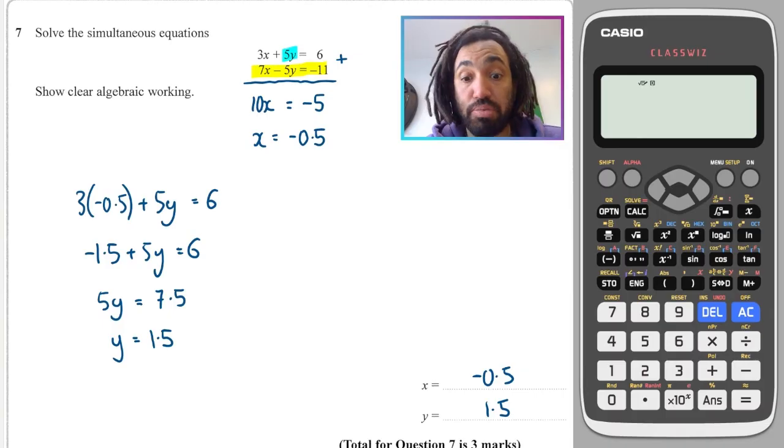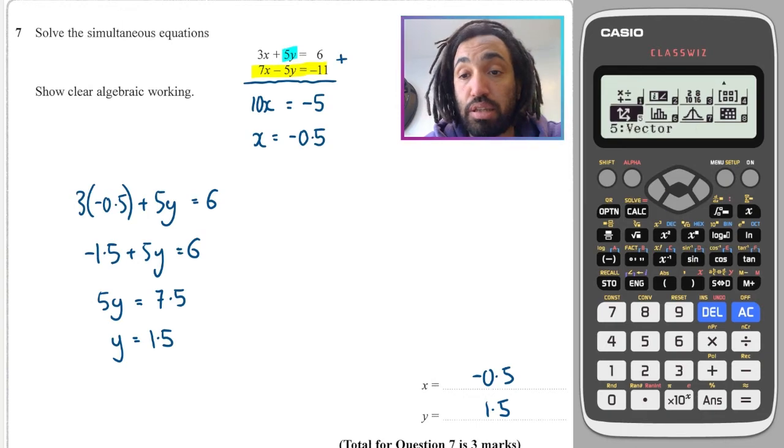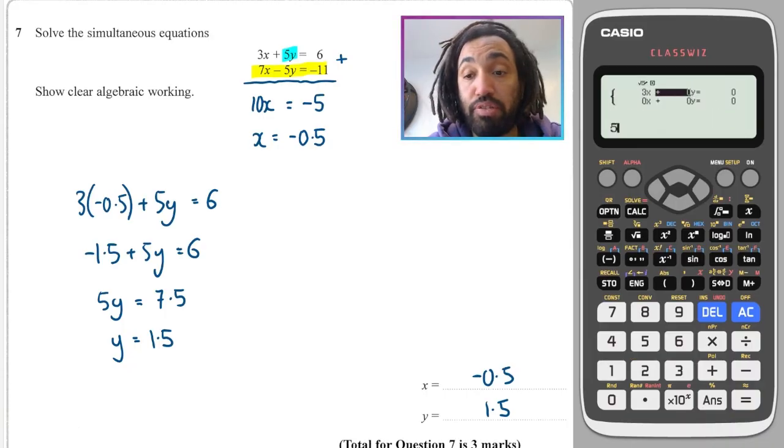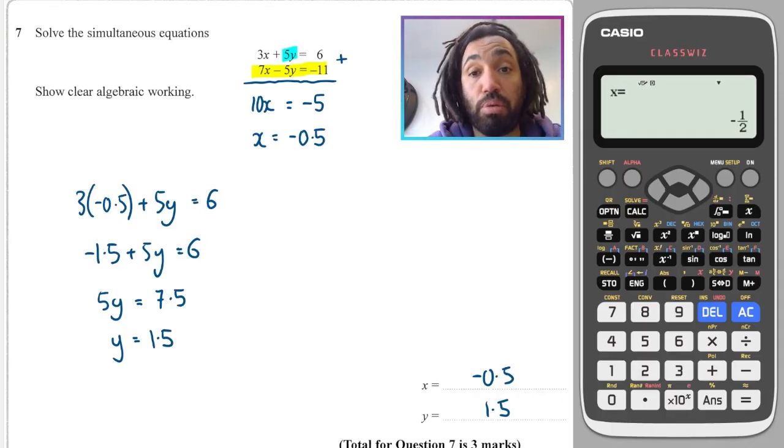Okay, and then top tip is to use your calculator to your benefit and check to see if it's right. So you go to simultaneous equations, two unknowns. You type in that it was 3, 5 and 6. And then it was 7 minus 5 and minus 11. And you have minus 1.5 and 1.5. Perfect. It works.